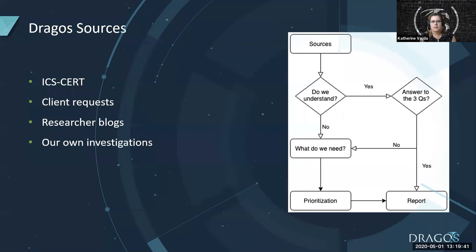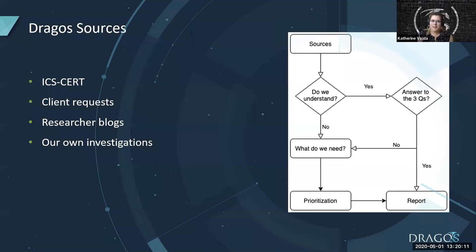What are our sources? There's an endless possibility of sources, but we can't do everything. First we assess ICS advisories published in ICS-CERT, but we also investigate products and assets as requested by our clients. While we're also looking at existing vulnerabilities, we'll potentially find more. We also look at any researcher blogs as well as any of our own investigations based off what we've got in our lab. Please keep in mind that we don't publicly disclose vulnerabilities that we find — we work with the vendors themselves instead.